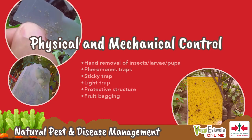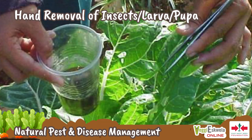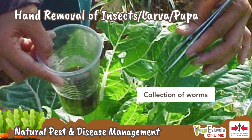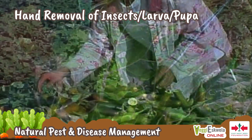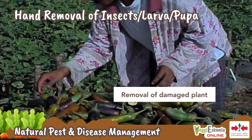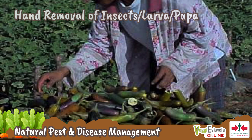Physical and mechanical controls use tools to directly remove or kill pests, or physically keep insect pests from reaching their host by means of a barrier or trap. Some methods alter the physical environment to make it unfavorable to pests. Physical and mechanical controls have relatively little impact on natural enemies and are compatible with biological control. Hand removal involves the removal of insects, larvae, pupae, and damaged plant parts by hand or using tweezers, so as to prevent pests from further infestation into the growing crops.